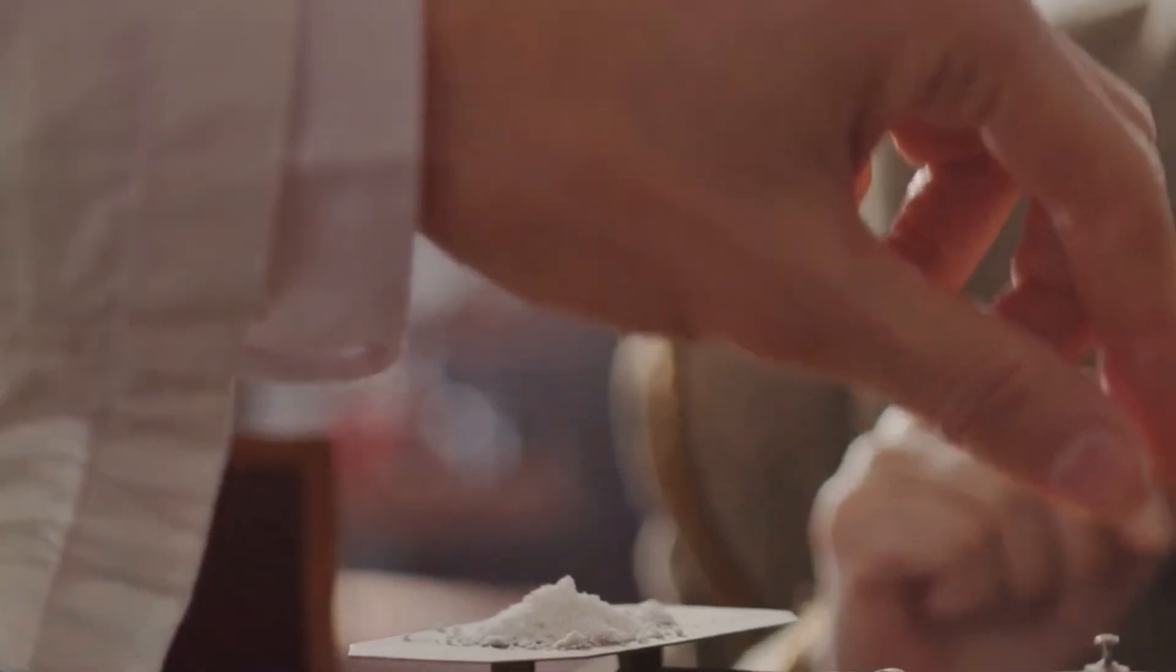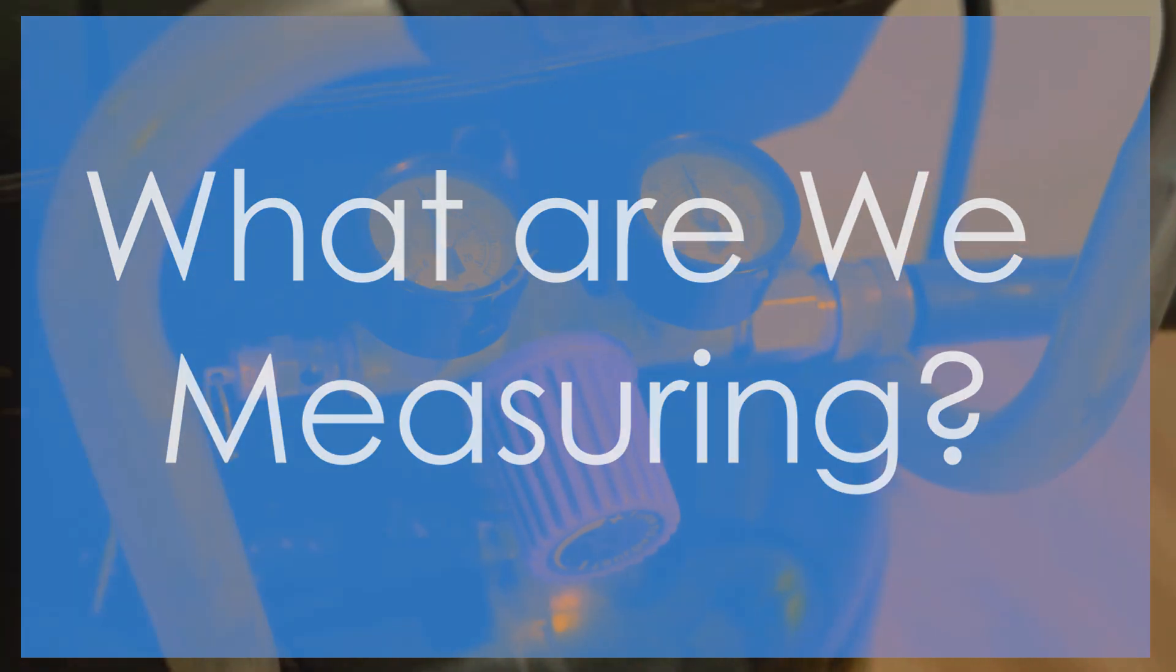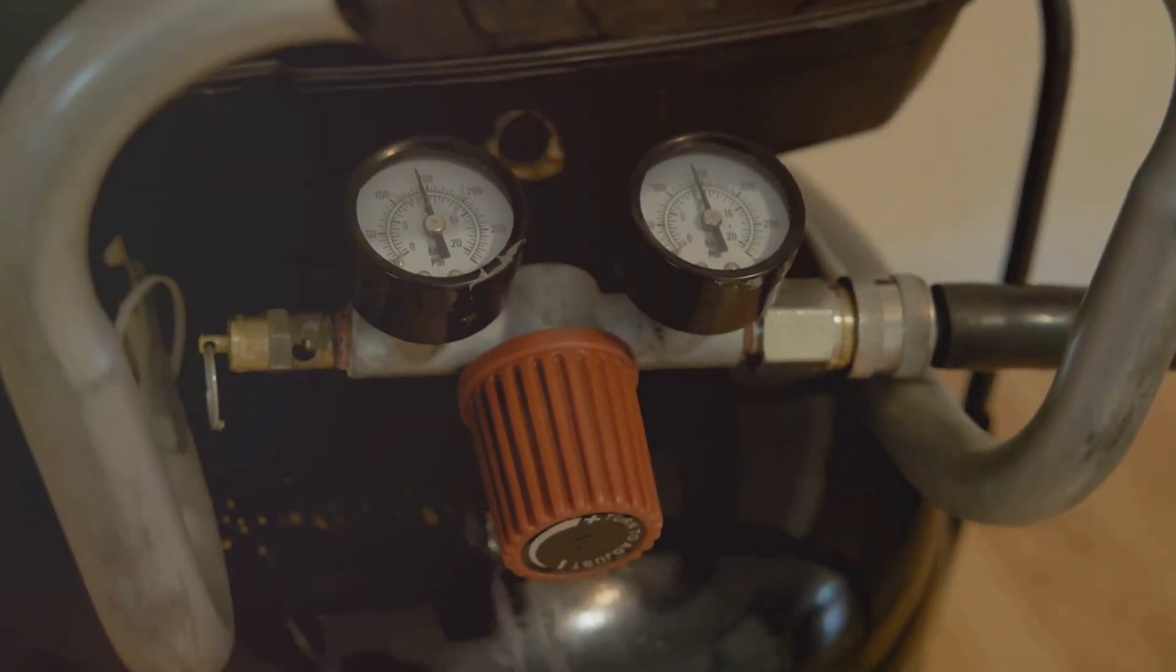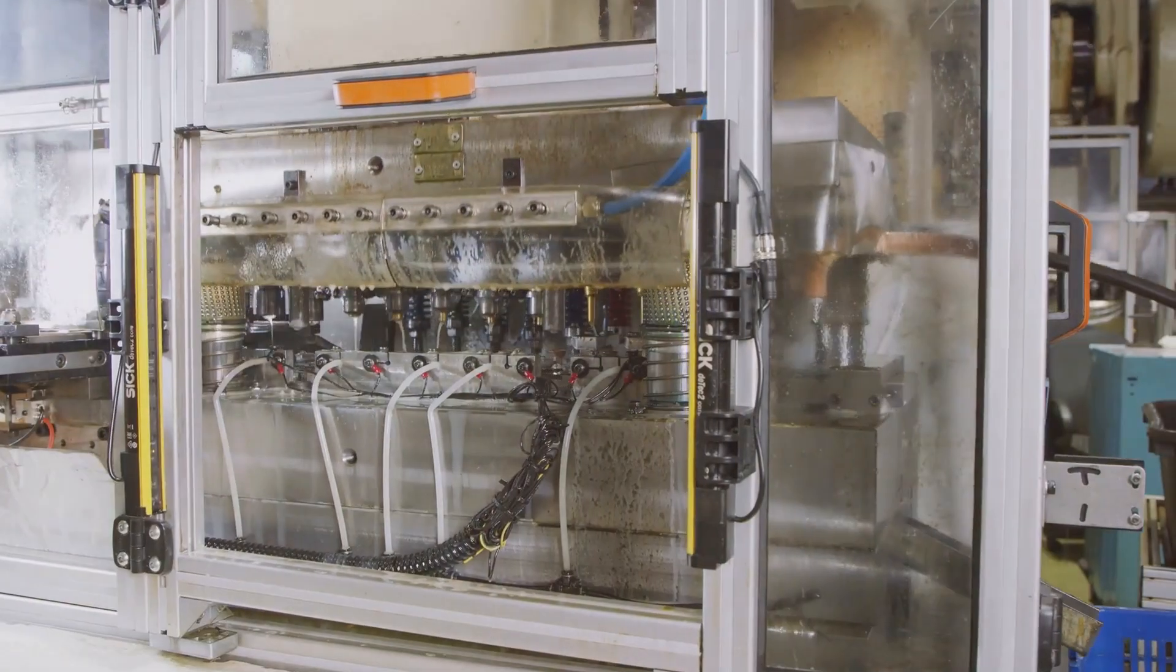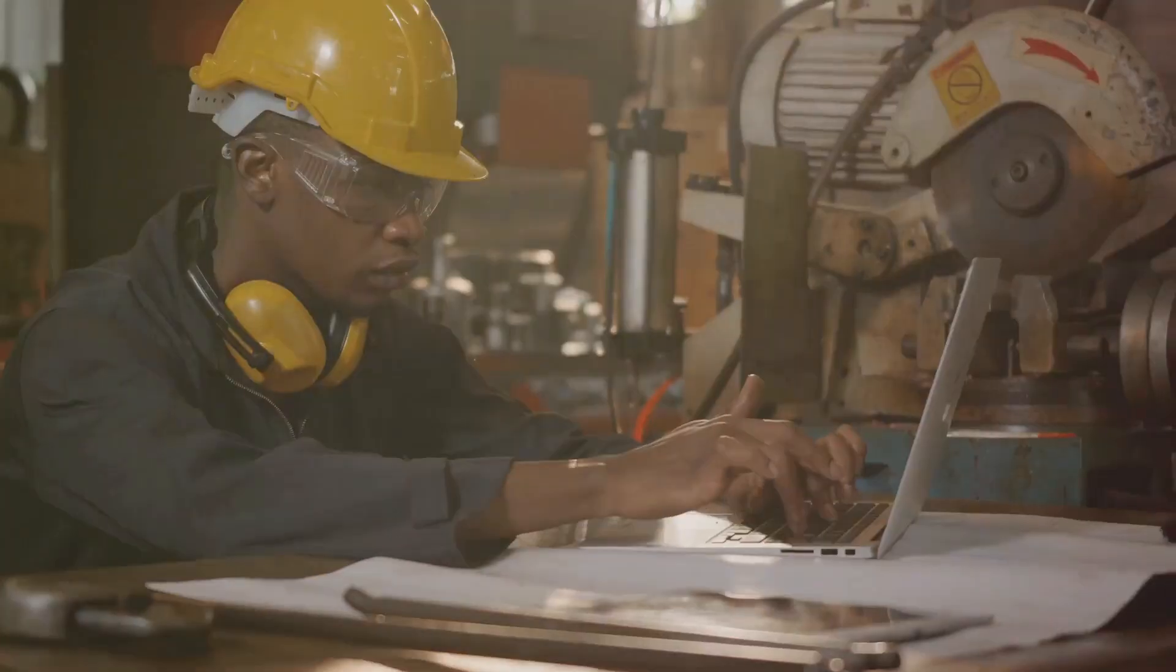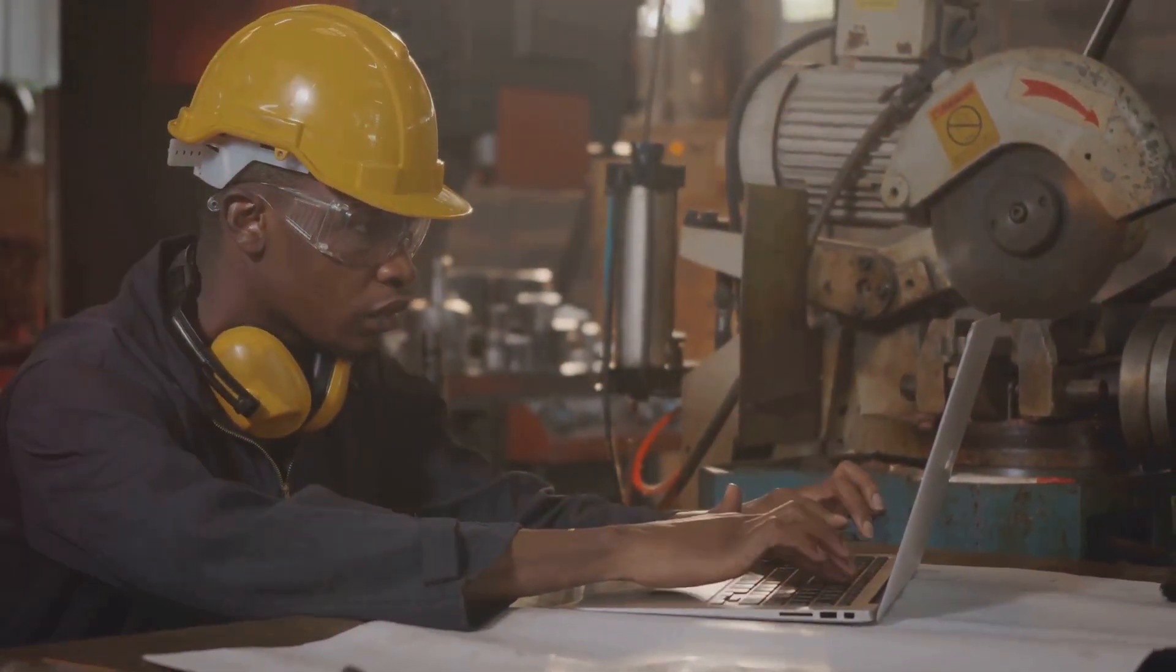Calibration is like making sure your watch is set to the right time, essential for accurate measurements. Process variables are the things we're trying to control—temperature, pressure, flow—all the important stuff.